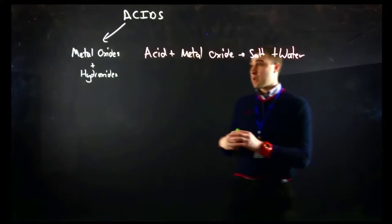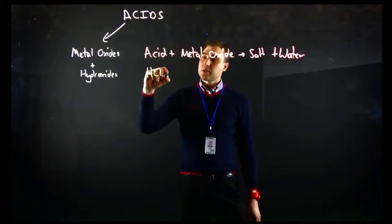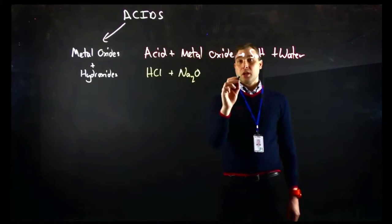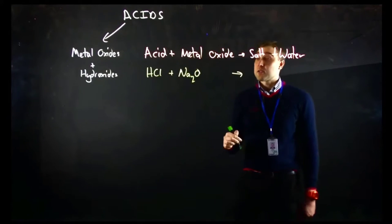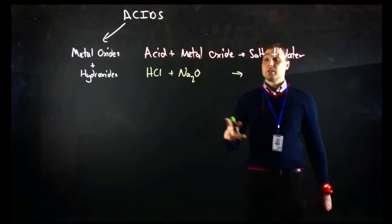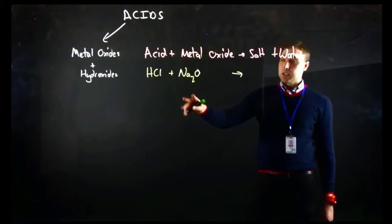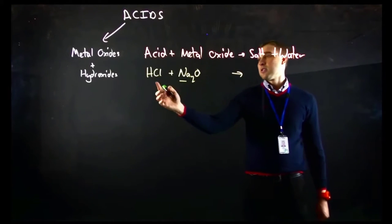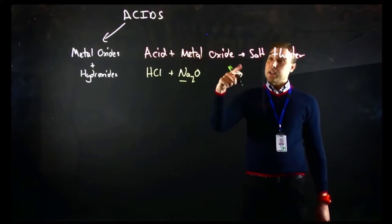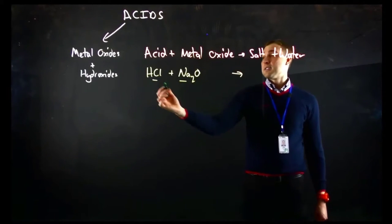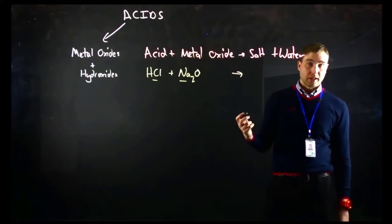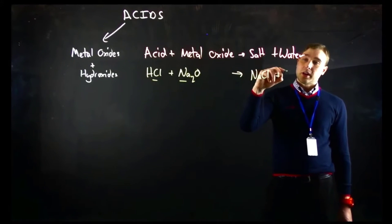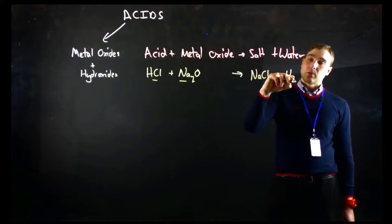In our first example we'll look at the reaction between hydrochloric acid and sodium oxide. To make the salt we're going to look at the positive part of the basic section, so that's our sodium ion, and the negative part of the acid, the chloride ion — that's going to make up the other part of the salt. So we're going to get sodium chloride and water.